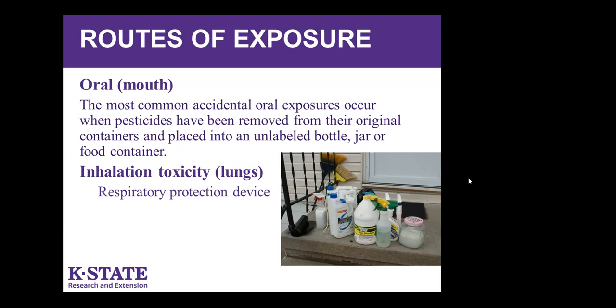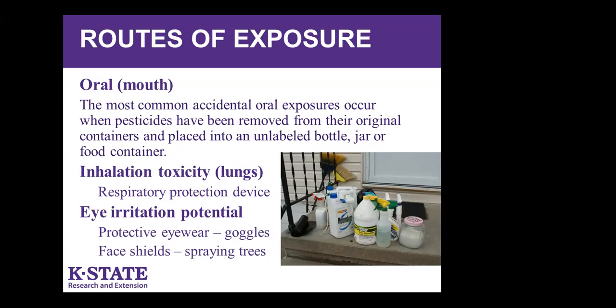Inhalation is another way we can be exposed — the first thing that comes to mind is Sevin Dust. Sevin insecticide is one of the most common homeowner products used today, and it's very difficult to use a dust product without inhaling it. Some products will require a respiratory protective device. Our eyes are also very vulnerable, particularly when spraying trees for bagworms or coddling moth in apple trees — if you're spraying above your head, that's going to drift back onto you. Many product labels say you need to wear goggles or face shields. We only have one body and we need to wear the protective clothing the labels state.